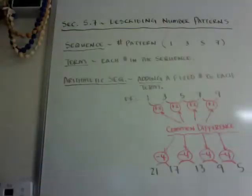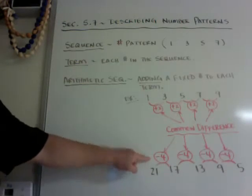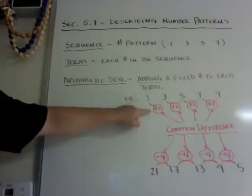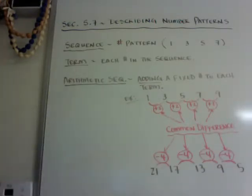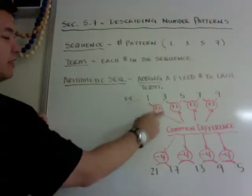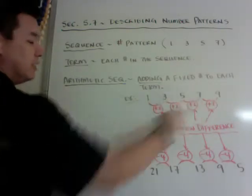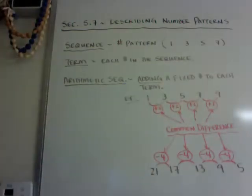So in this case, my common difference is negative 4. So it would be positive 2, or you could write just 2, that's assuming it's positive, or you have to write negative 4 if it goes down. So again, your common difference is whatever number you add or subtract between each term.